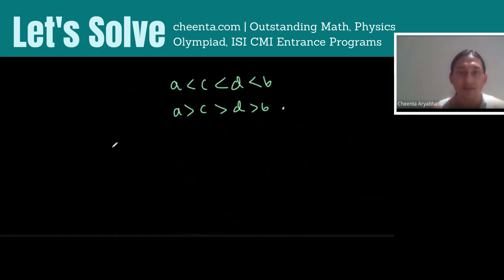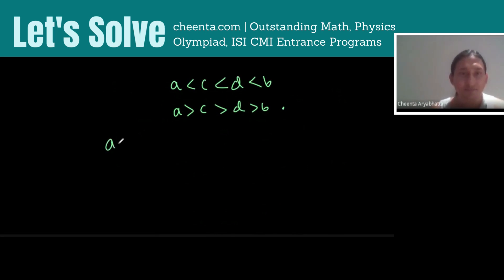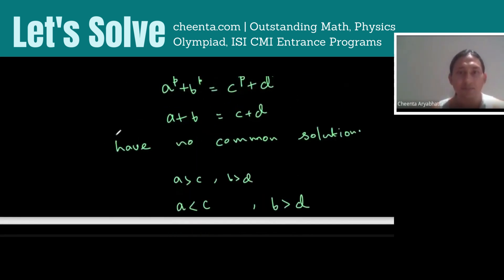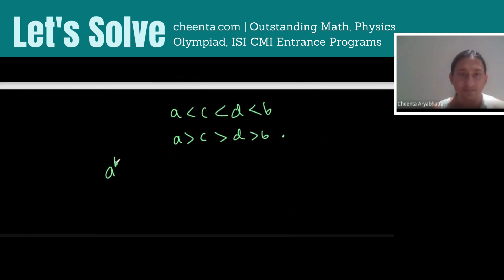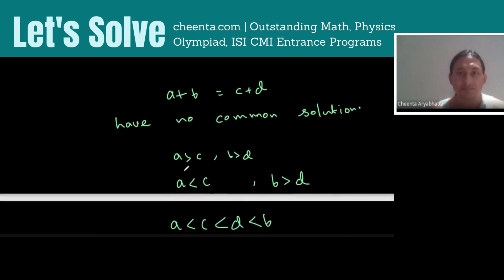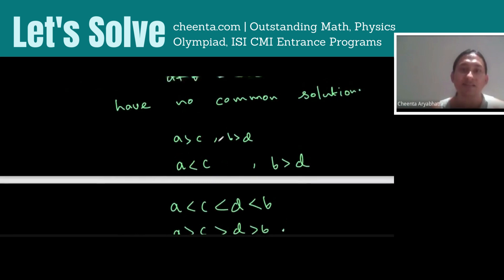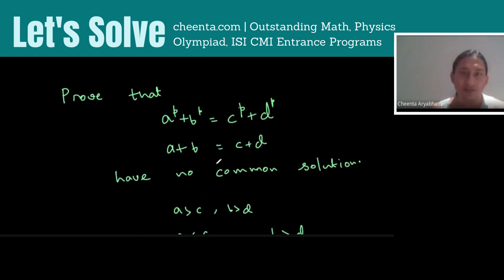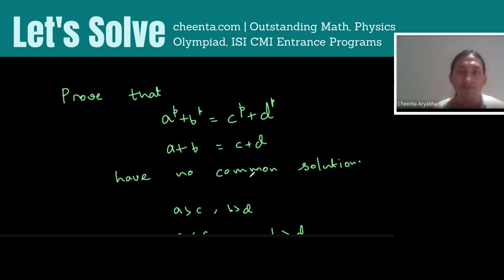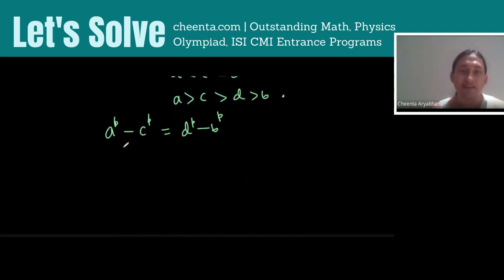So what's happening is, note that A^P - C^P equals D^P - B^P. And as A - C is equal to, we have assumed, we have assumed that A - C is equal to D - B. We can divide the two sides by that.